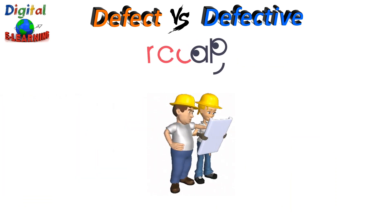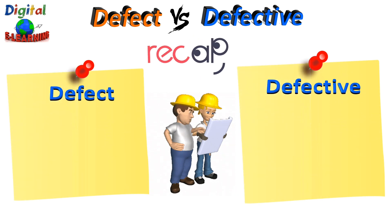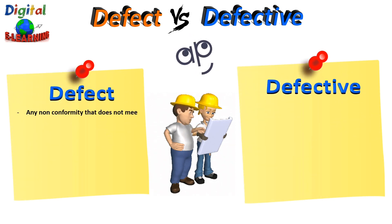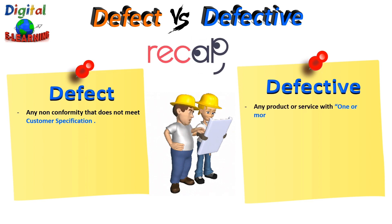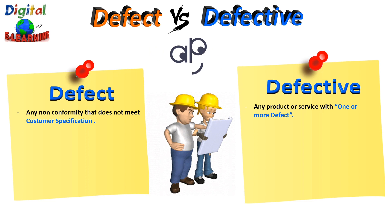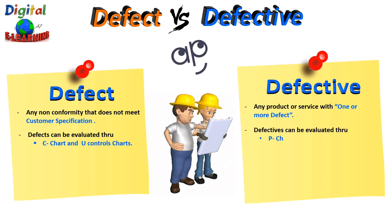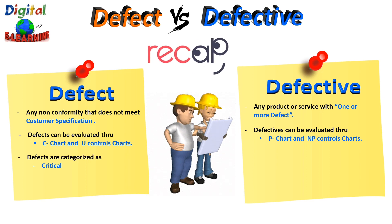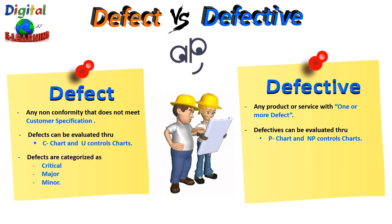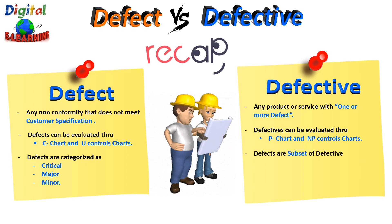Let's do a quick recap. A defect is any non-conformity that does not meet customer specification. A defective is any product or service with one or more defects. Defects can be evaluated through C chart and U-type control charts. Defectives can be evaluated through P chart and NP control charts. Defects are categorized as critical, major, and minor. Defects are basically a subset of defectives.